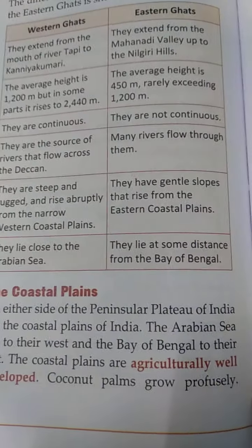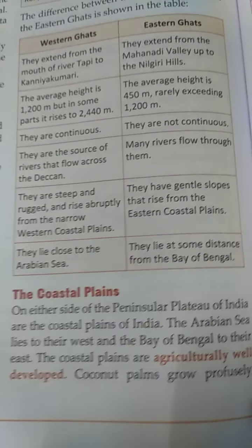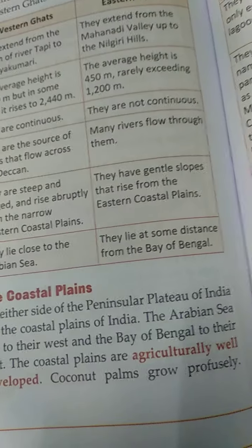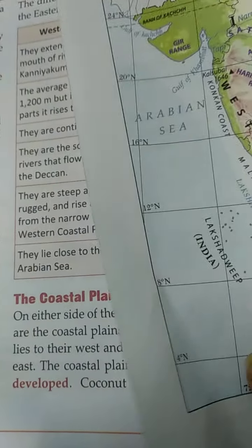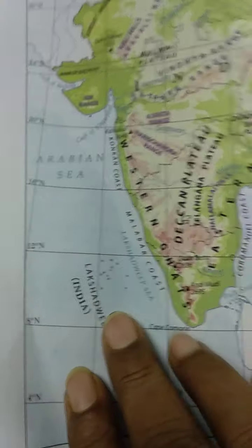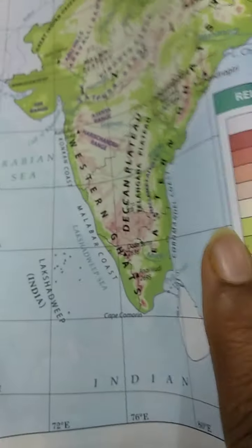The Arabian Sea lies to the west and the Bay of Bengal lies to the east. Here it is the Arabian Sea and here it is the Bay of Bengal.